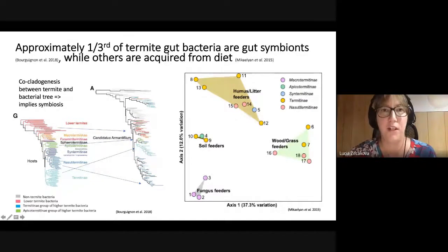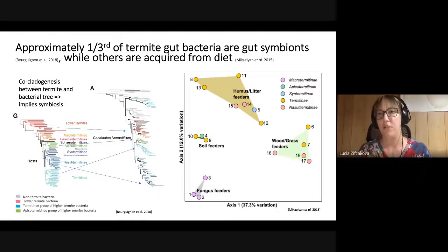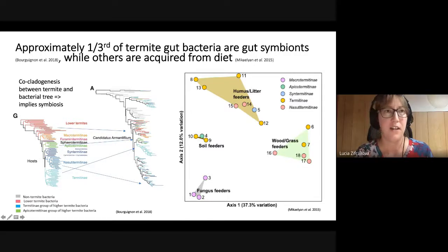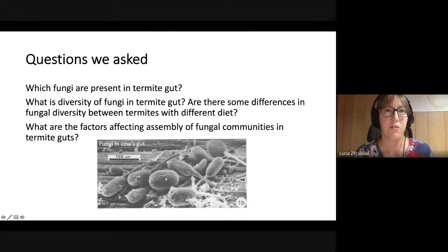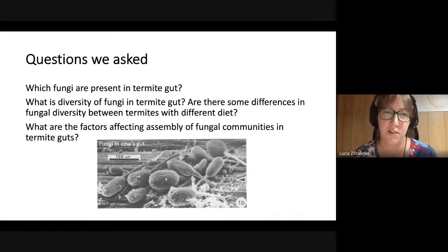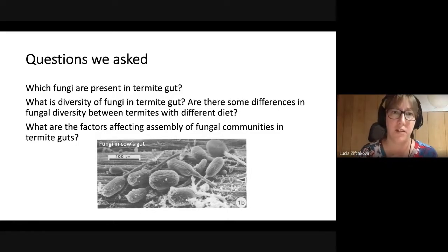On the other hand, in another study it was shown that termite bacterial communities are affected mostly by diet. Different termite species from different taxonomical groups clustered together based on their diet. So we asked: which fungi are present in termite guts? What is the diversity of fungi in termite guts? Are there differences in fungal diversity between termites with different diets? And what factors affect the assembly of fungal communities in termite guts?